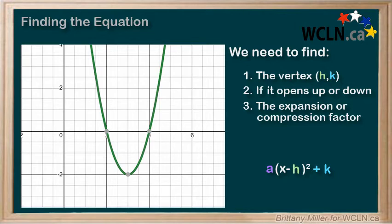First things first, our vertex is the top or bottom of the u. On this graph, it's here at (3, -2). This means that h is 3 and k is negative 2.